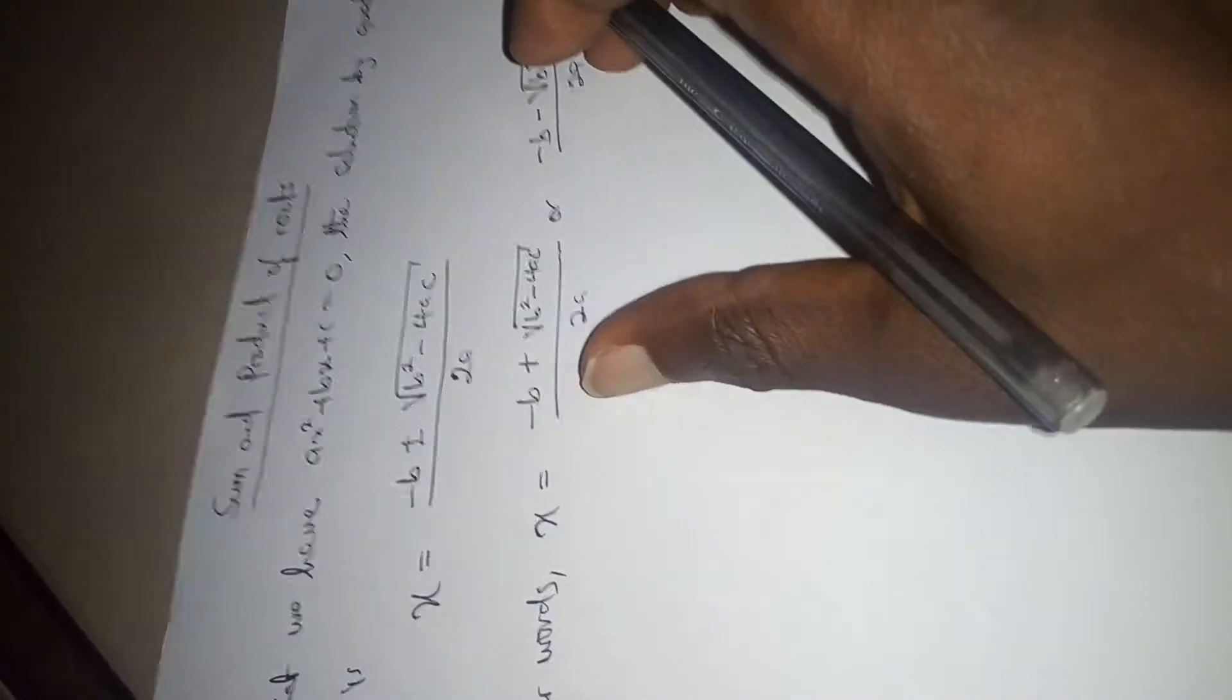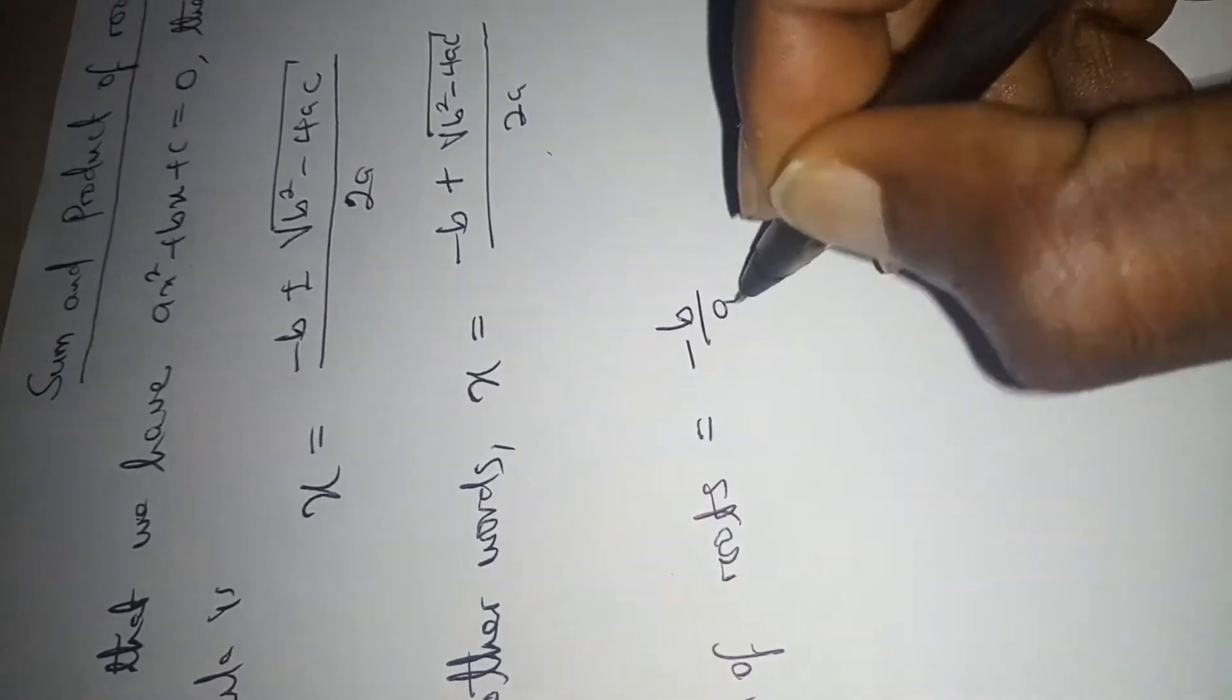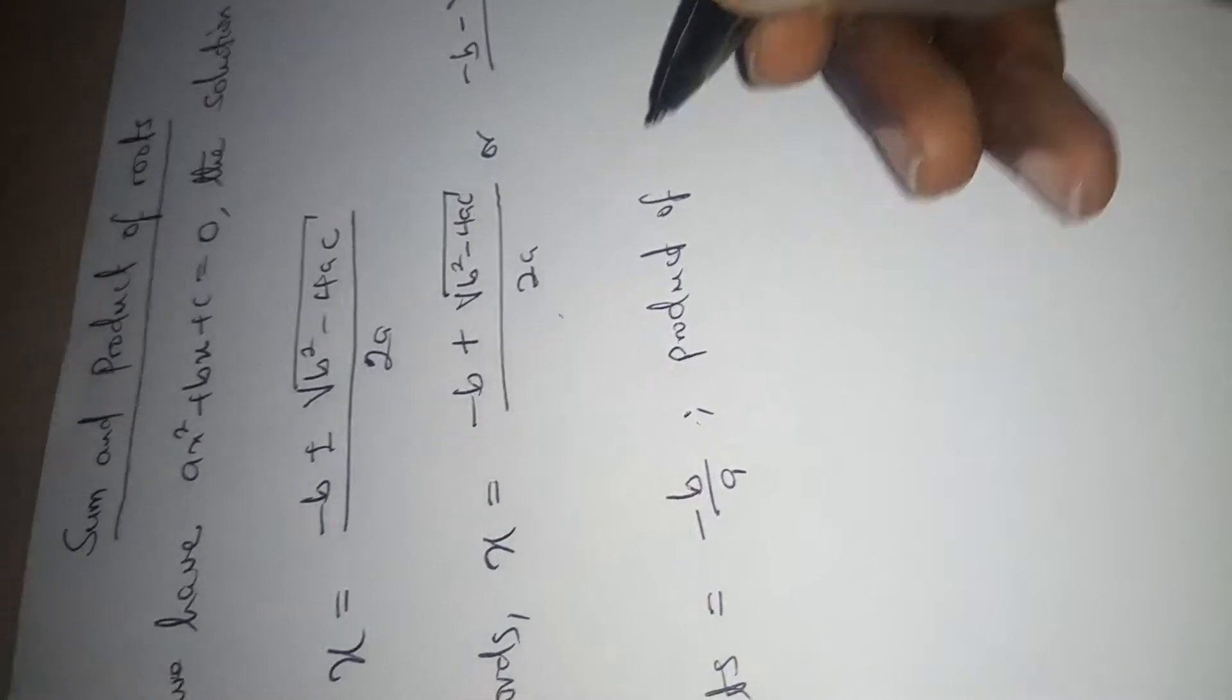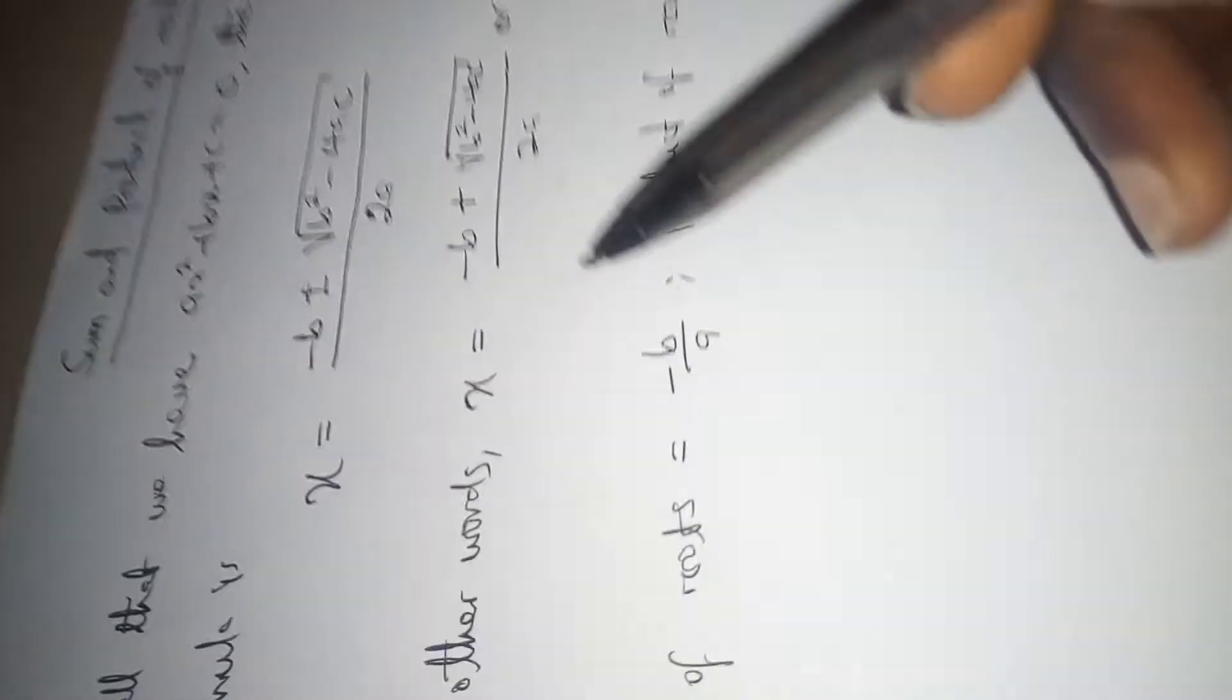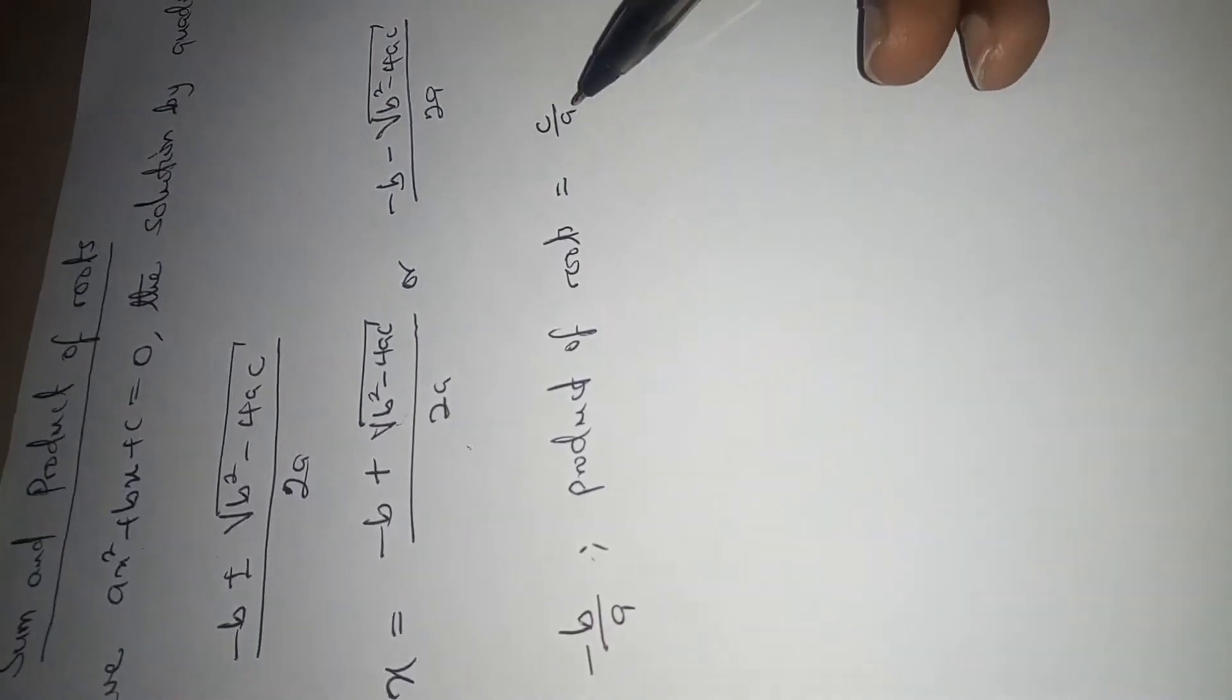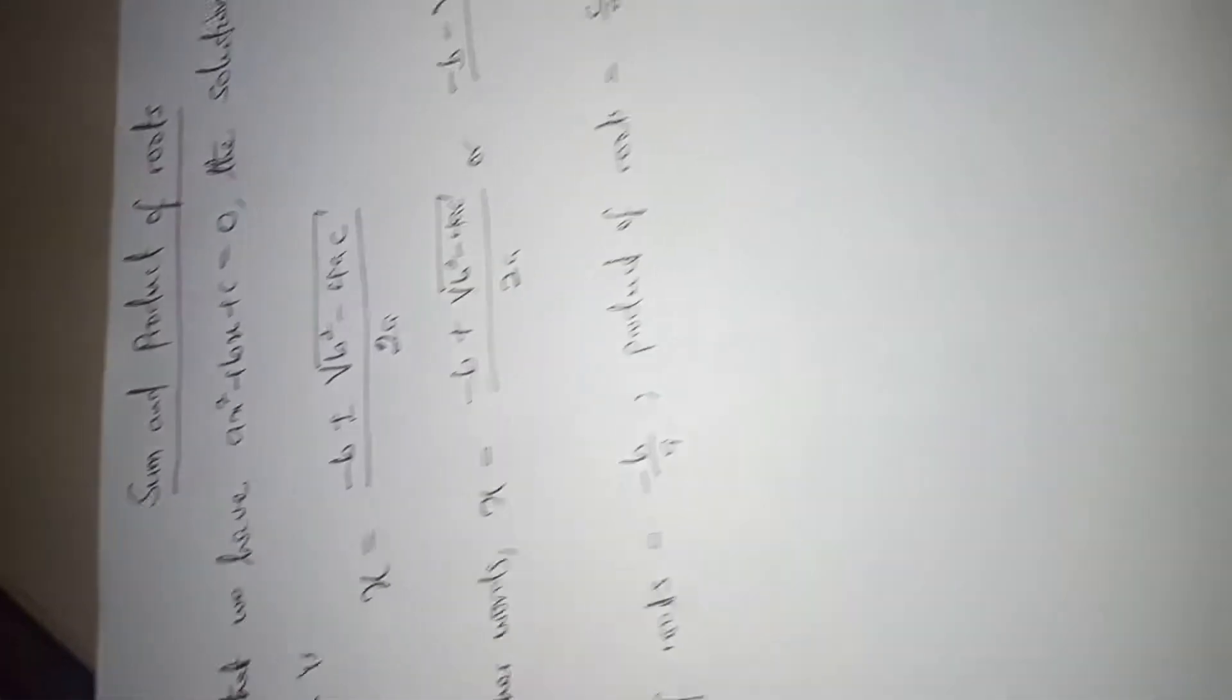So it is from this we now have what we call the sum of roots, which is minus B over A, and we also have product of roots, which is C over A. So we try to sum these two, we get this, and we also try to find the product of these two, we get this. So these two formulas are very important whenever you want to find the sum and the product of root of a quadratic equation.